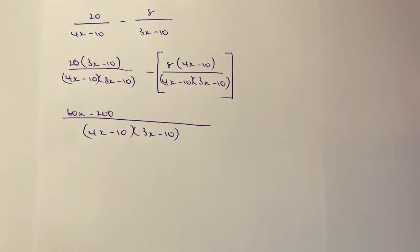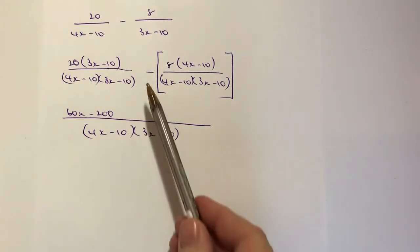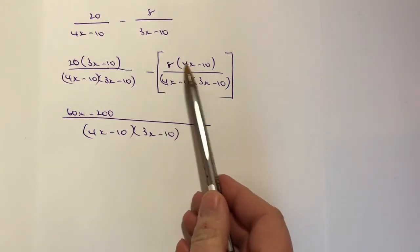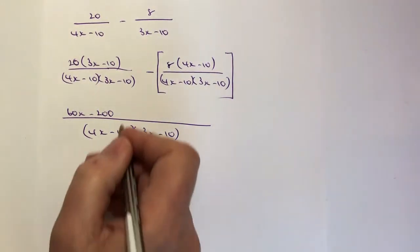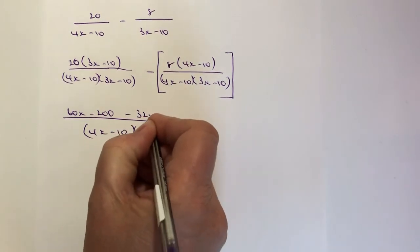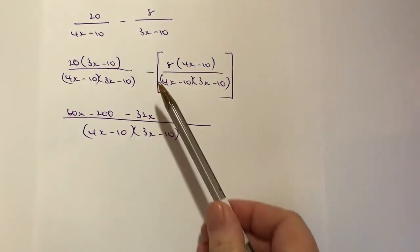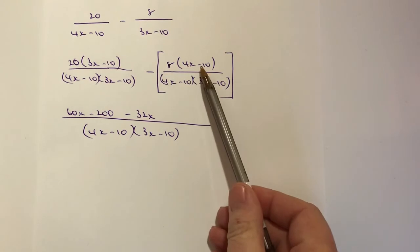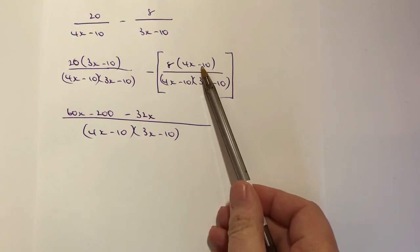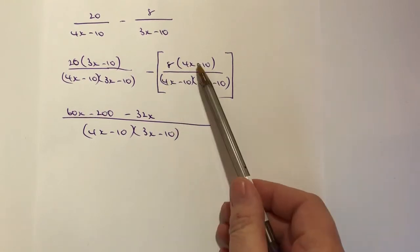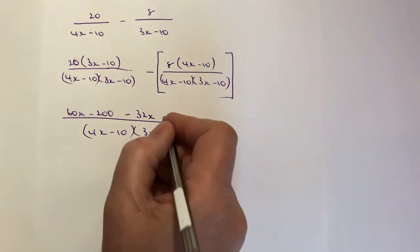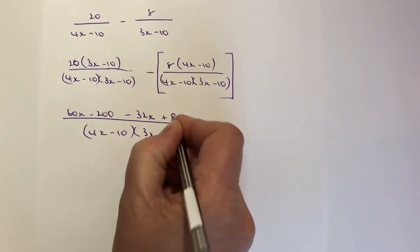So that's going to give me 20 times 3 is 60x minus 200. They're giving us some big numbers to play around with today. Then I've got minus 8 multiplied by 4 is going to be minus 32x. And then I'm going to have minus 8 times minus 10. So be very careful. Minus times minus is positive. So it's going to give me positive 80.